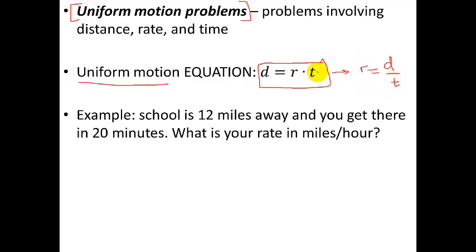Rate times time equals distance. So anything involving distance, rate, and time is called a uniform motion problem. Uniform because you're going at constant speed. And that's all there is to it. So solving these kind of problems, the best way for me to do this is to show you some examples.